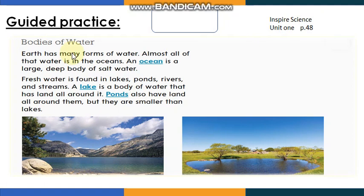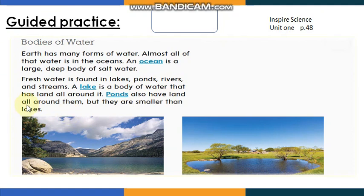Let's read together: 'Bodies of water — Earth has many forms of water. Almost all of that water is in the oceans. An ocean is a large, deep body of salt water. Fresh water is found in lakes, ponds, rivers, and streams. A lake is a body of water that has land around it. Ponds also have land all around them, but they are smaller than lakes.'